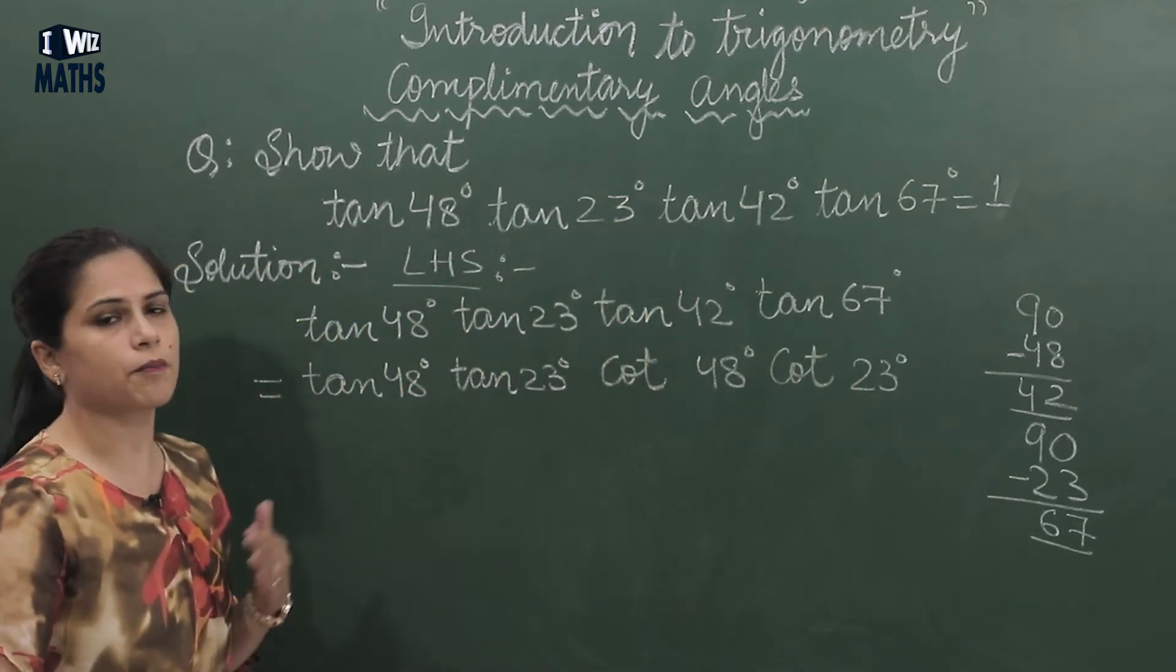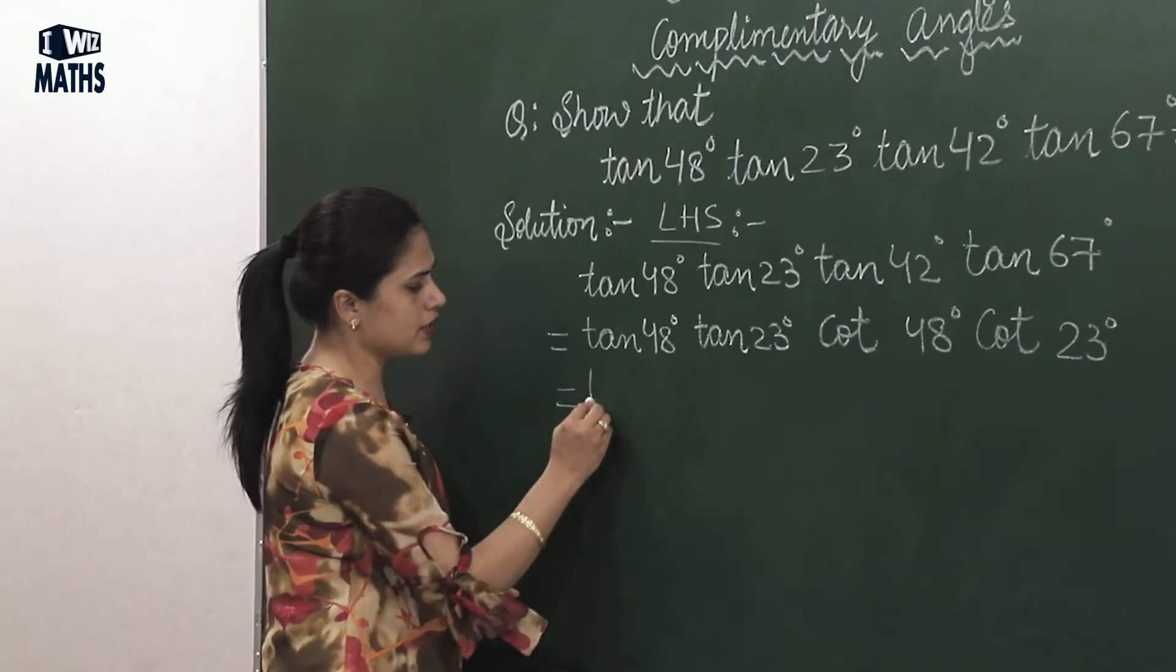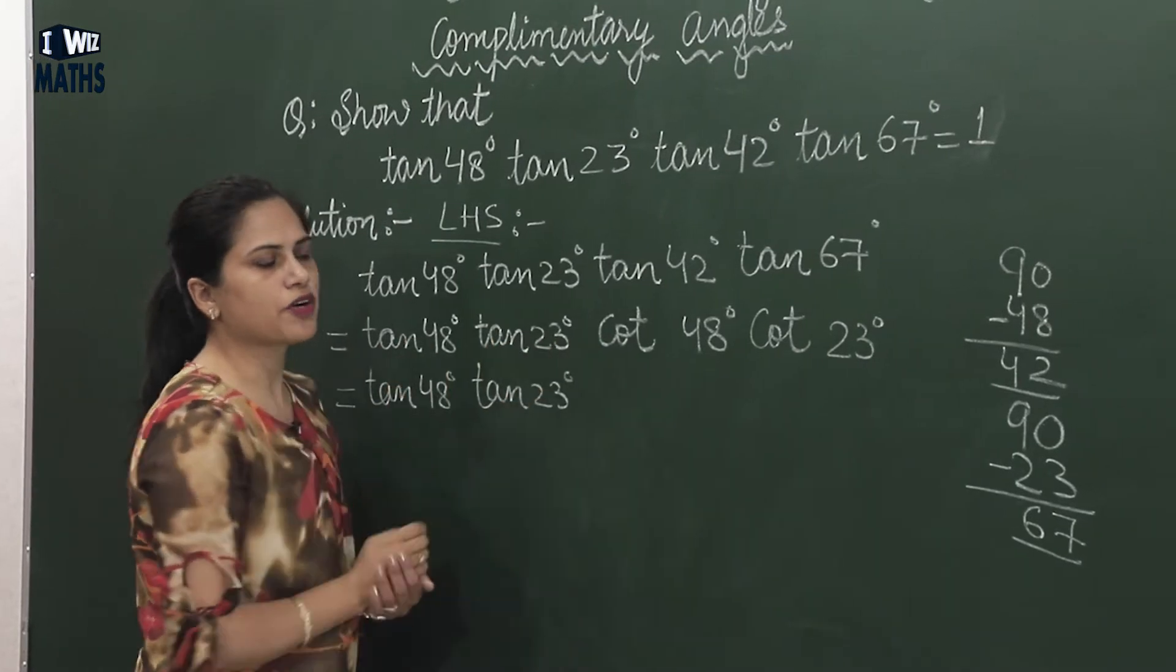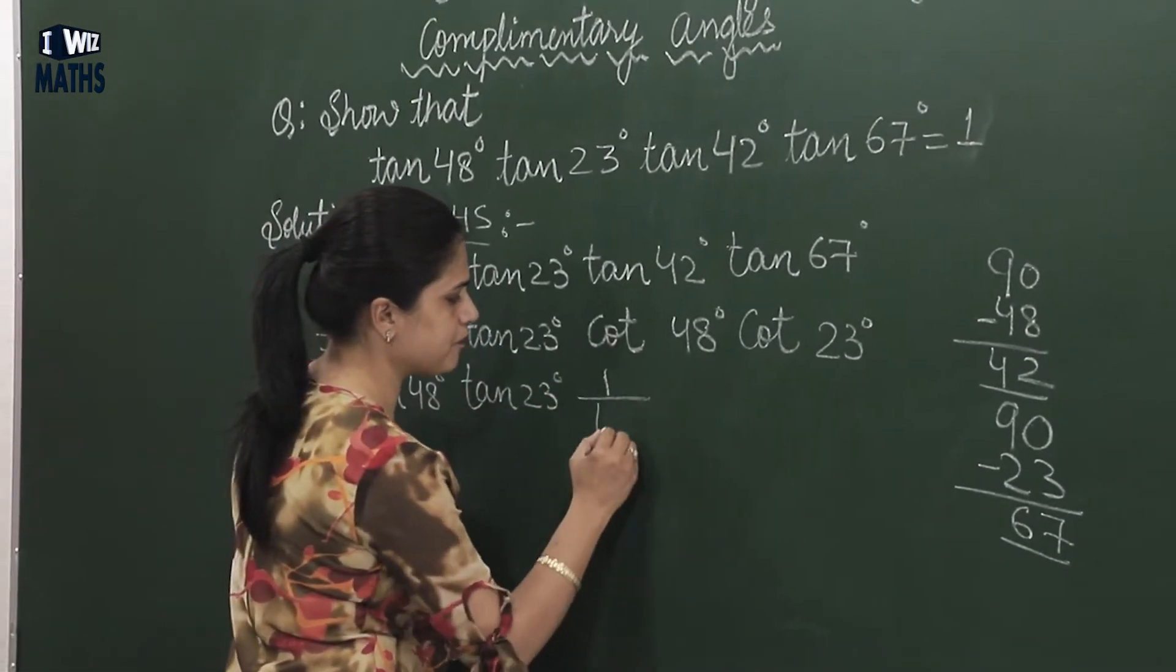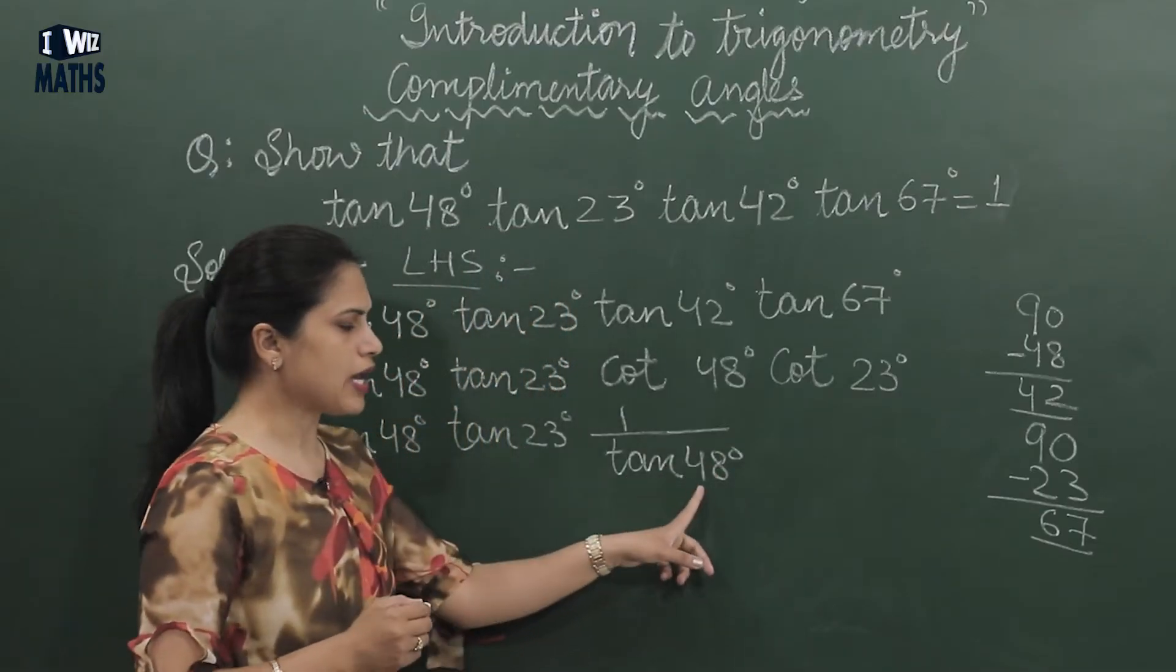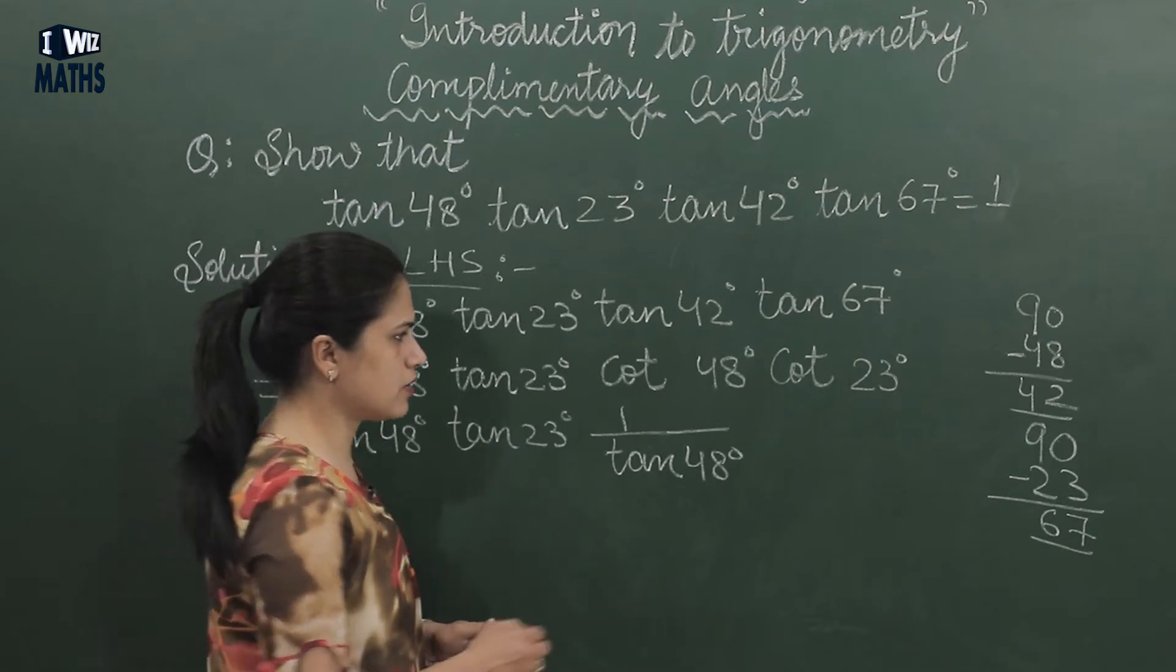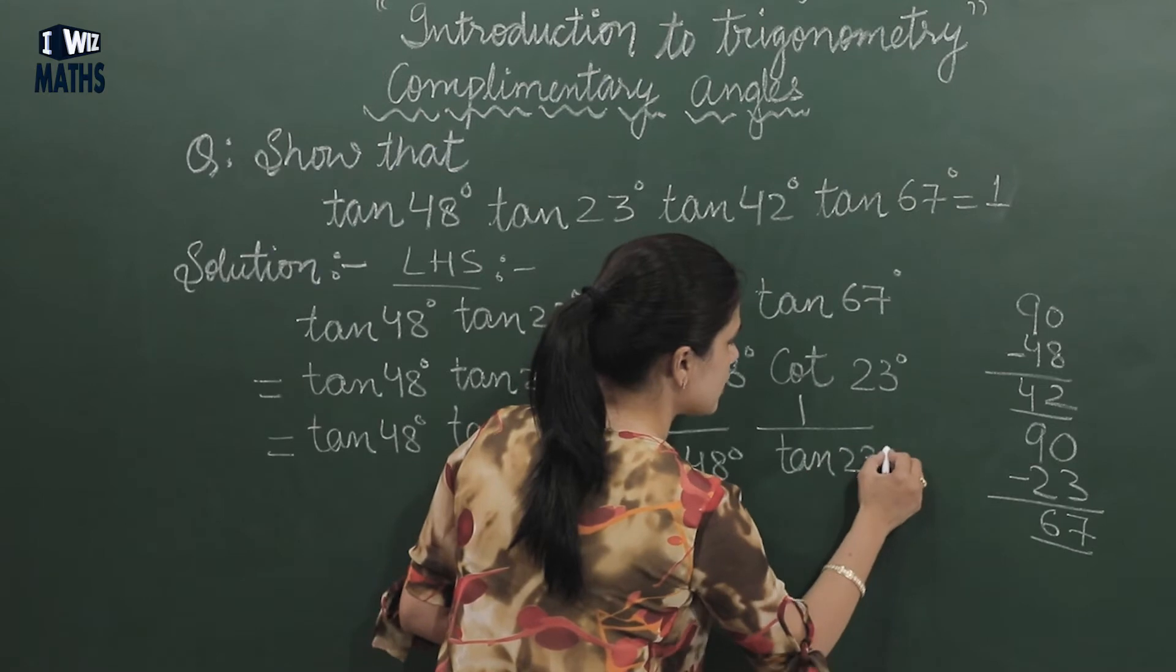Now I've applied the complementary concept here. Now we'll simplify this. How will we simplify? tan 48° I've written as it is, tan 23° I'll also write as it is, but cot 48° I'll write in tangent form. That will be 1/tan 48°. Remember, whichever function is written with an angle, it's not that only cot becomes 1/tan and 48 remains the same - whichever function it is, it will go with its angle. And cot 23 will become 1/tan 23°.